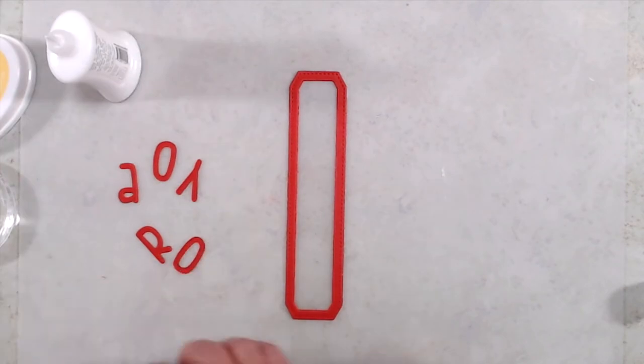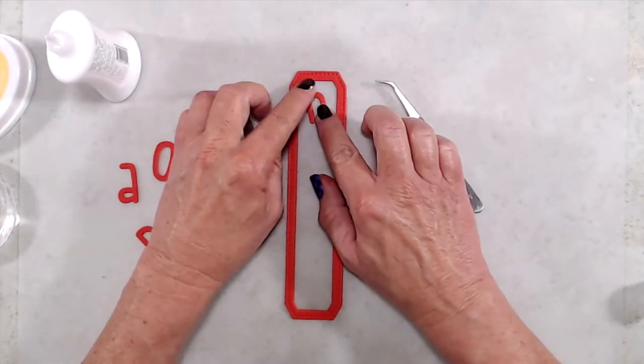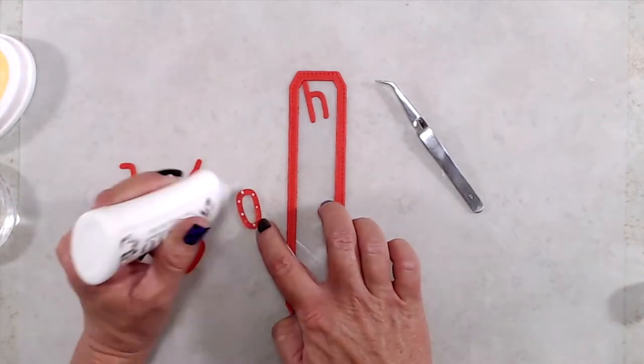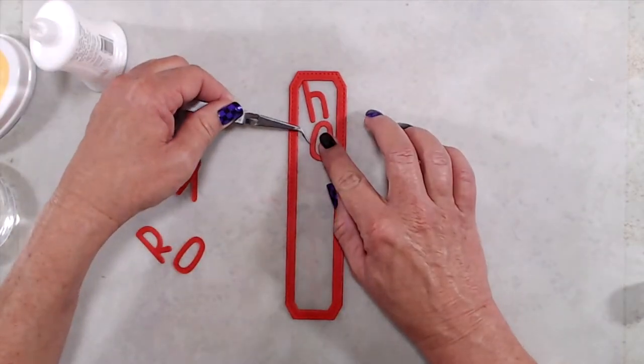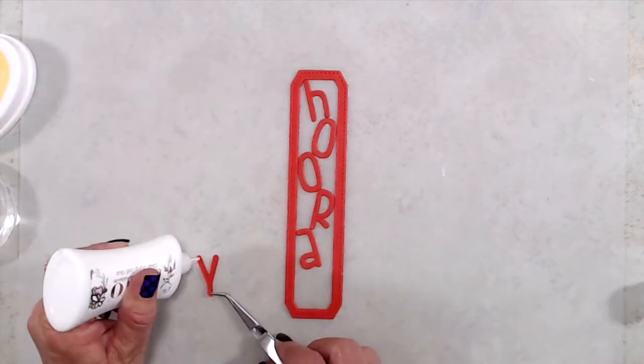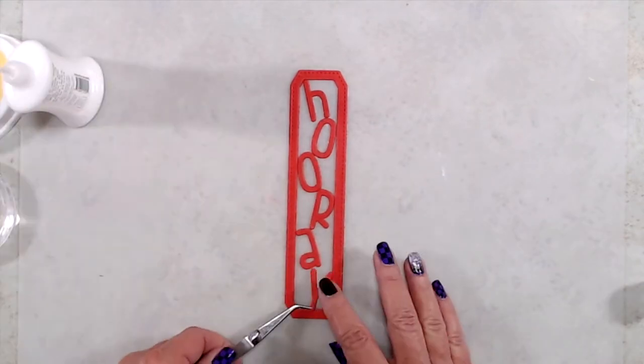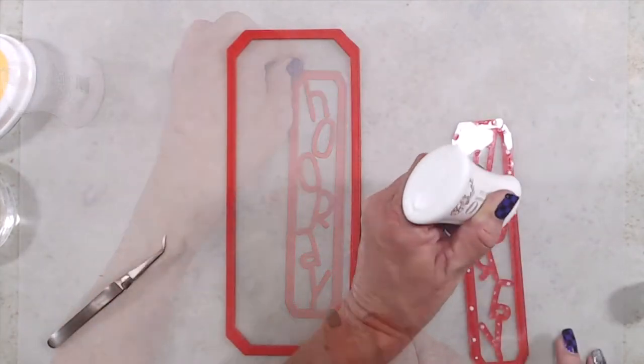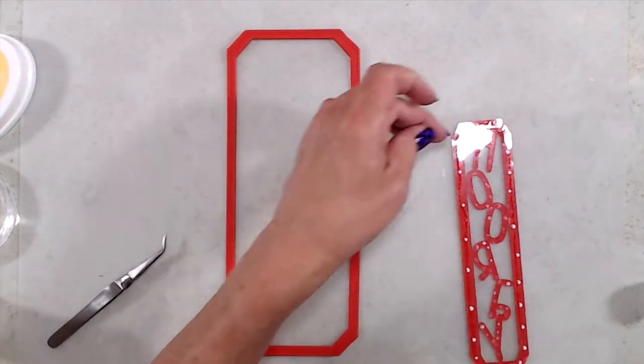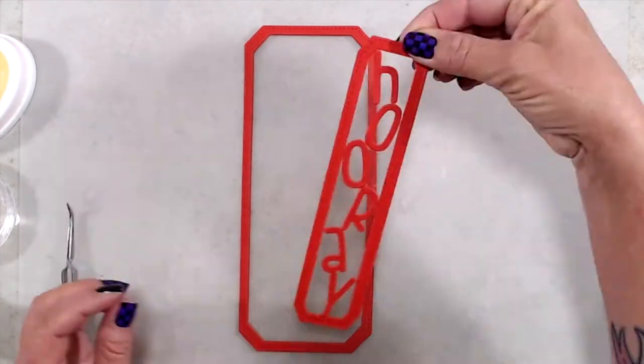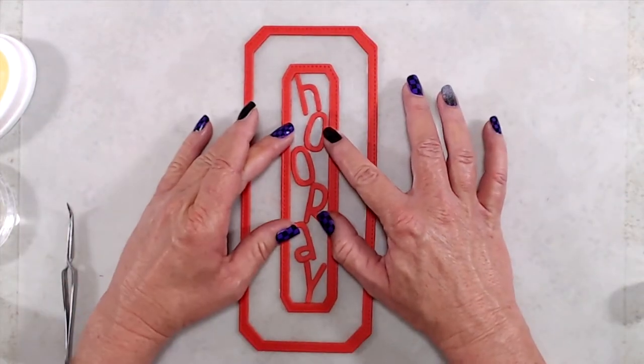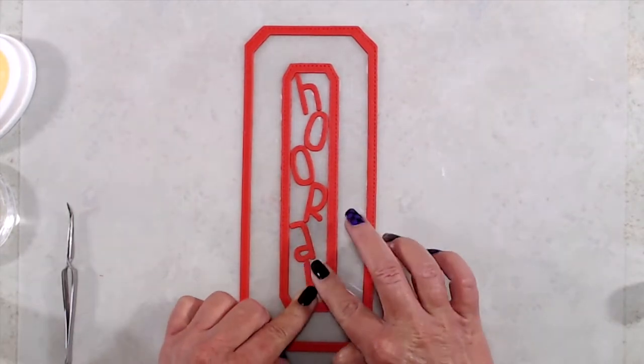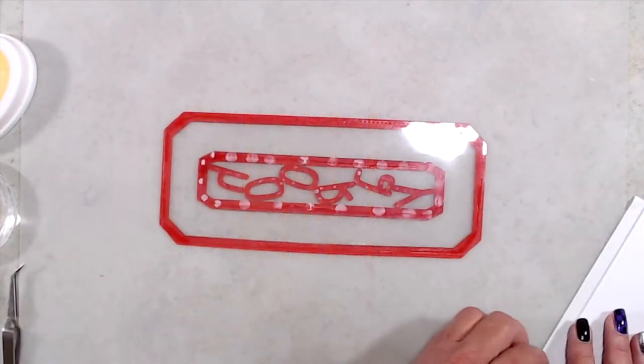I had die cut the word hooray using the Cutie Alphabet die set, and again I used liquid glue to adhere the letters. You'll see that as I adhere the smaller frame on the larger frame and I press it down, the letter Y just slides right off. But I was able to stick it right back into place. So I would suggest instead of using liquid glue to adhere the frames and the sentiment to the acetate, I would suggest using something like score tape instead.